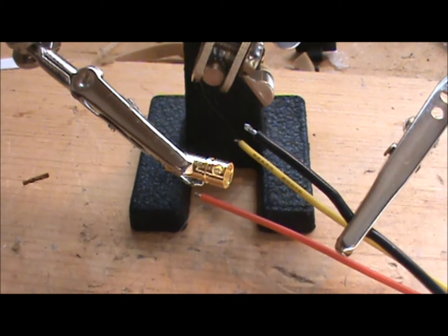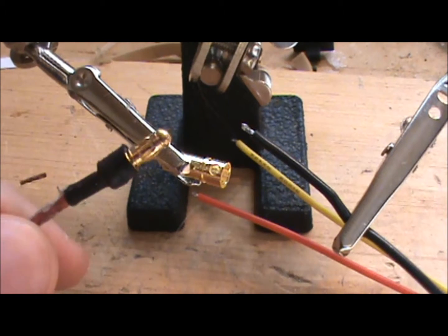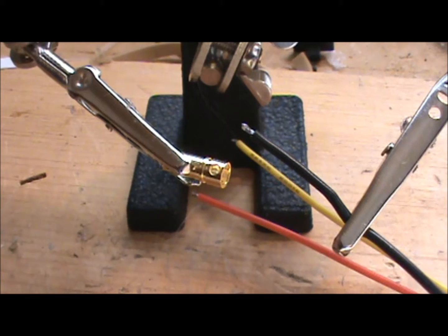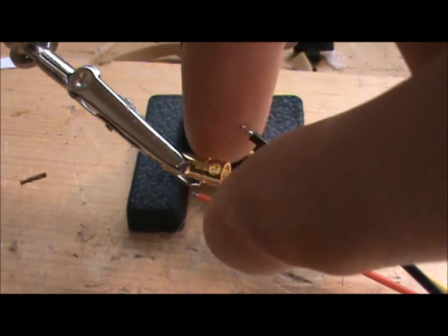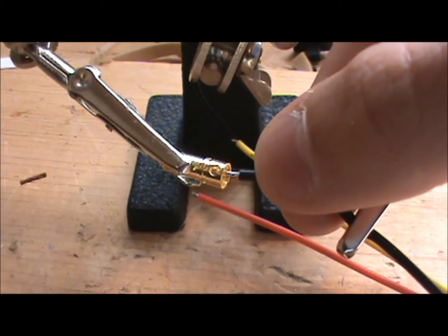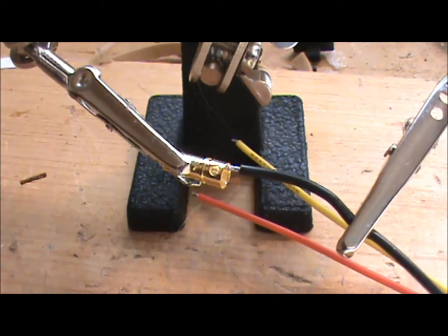So this is the male bullet connector that's from the motor and this is the female bullet connector that I'm going to solder onto the ESC.